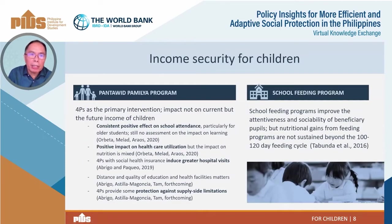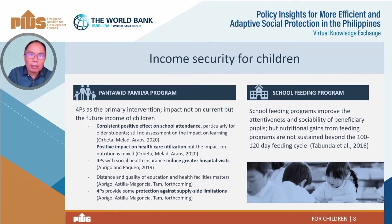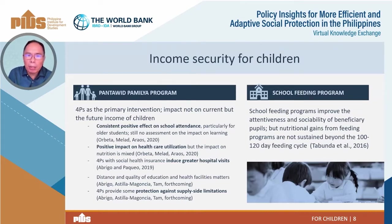Turning to the income security of children, two main interventions are the Pantawid Pamilya, or 4Ps, and the feeding programs. It is worth reiterating that 4Ps secures the future, not the current income, of children. Several rounds of impact evaluations show a consistent positive impact on school attendance, including elementary school in earlier years and older children in more recent years. However, up to now we are still not able to assess the impact on learning — the key question is: are they attending, but are they learning?